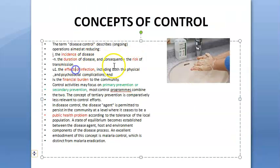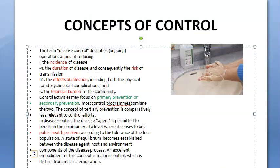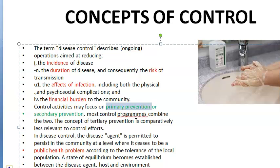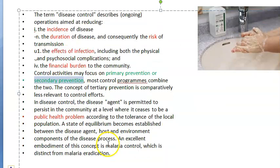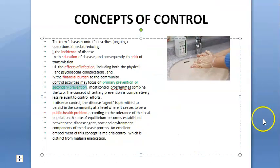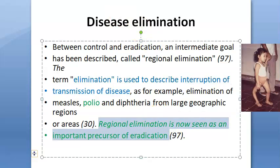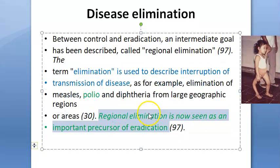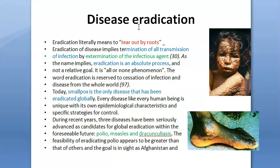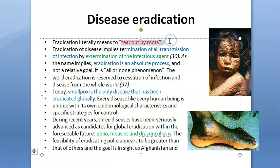To recap: control means you want to reduce the incidence, the duration, the risk of transmission, the effects of the infection, and the financial burden on the community. You will have primary prevention — health promotion and specific protection — and secondary prevention — early diagnosis and treatment — so that the disease will be there in the environment but will not be a public health problem. Then disease elimination refers to the interruption of transmission of disease, with examples like measles, polio, and diphtheria. Regional elimination, like India eliminating polio, is seen as a precursor to eradication, which means the disease is torn out by the roots globally — talking about cessation of infection and disease from the whole world.